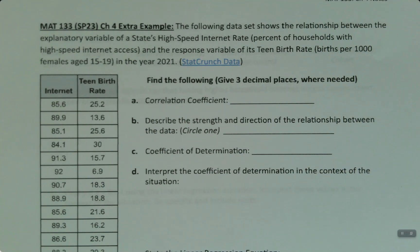Chapter 4 can be really tricky for people, so I thought I'd make us an extra example to try to set all the important pieces in our mind. We have the following data set that shows the relationship between the explanatory variable of a state's high-speed internet rate, which is the percent of households that have high-speed internet access, and the response variable of its teen birth rate, which is the births per 1,000 females aged 15 to 19. This was from the year 2021.